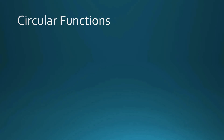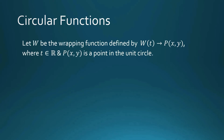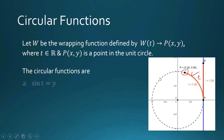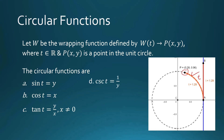Before we go into the domain and range of sine, cosine, and tangent, let us go back to how we define circular functions. Let t be a real number. For any real number t, there is a corresponding arc in our unit circle whose length is also t, and that arc has an endpoint — let's call it point p. Sine of t is y. Cosine of t is x. Tangent of t is y over x, where x is not equal to zero. Cosecant of t is 1 over y, where y is not equal to zero. Secant of t is 1 over x. And cotangent of t is x over y, where y is not zero.